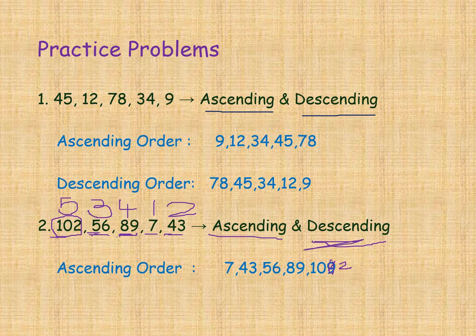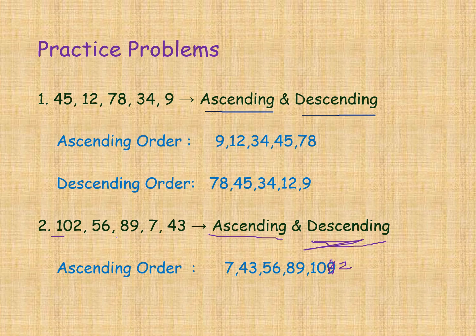Now we are discussing descending order — largest to smallest. In the given numbers, which is the first largest? We compare hundreds places. Here 102 has hundreds digit 1, and the others have zero. So 102 is the greatest number and is the first number in descending order.